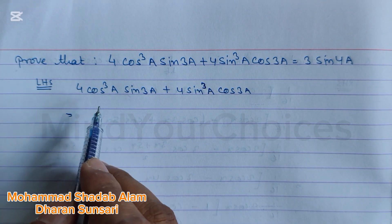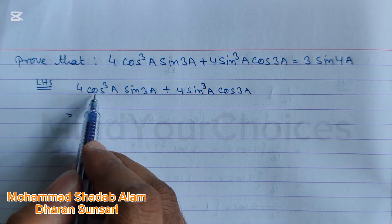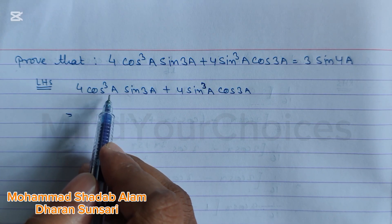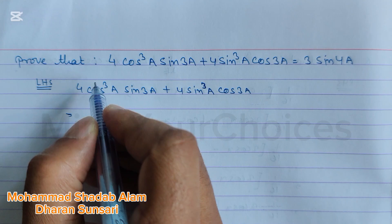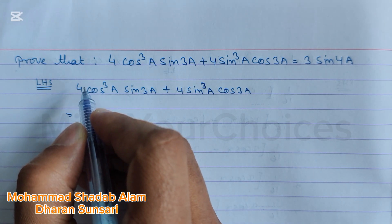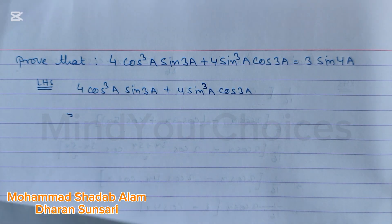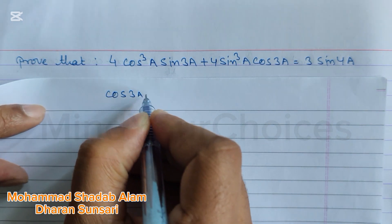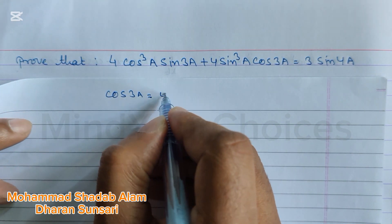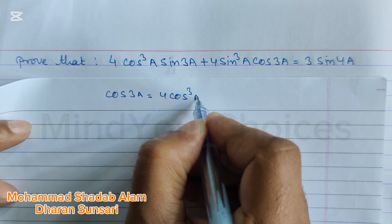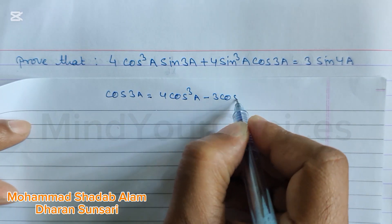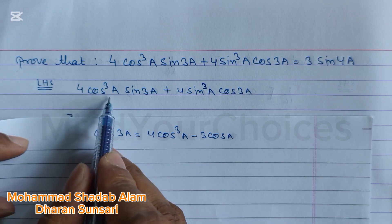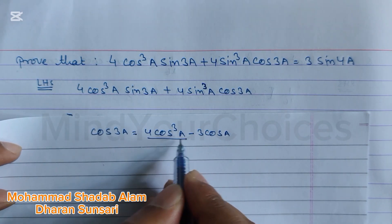First of all, we have to use the formula. We need the cos³a formula. From the cos3a formula, we can extract the value of cos³a. What is the formula of cos3a? The formula is: cos3a = 4cos³a minus 3cosa.